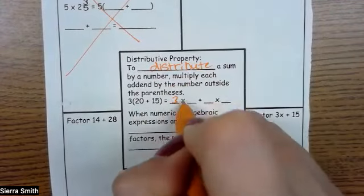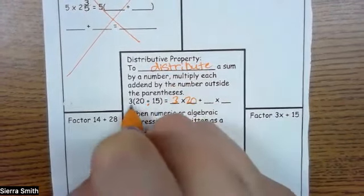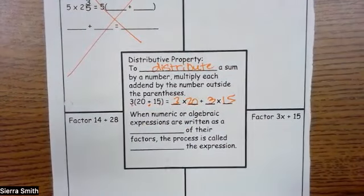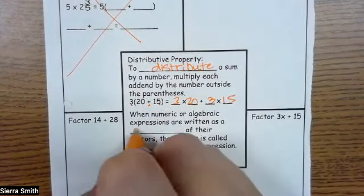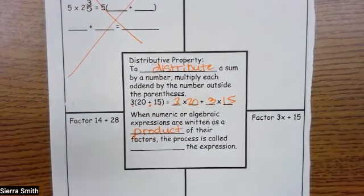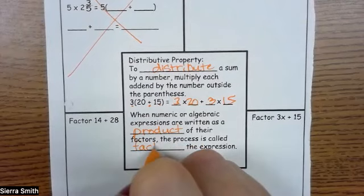So 3 times 20 plus 3 times 15. When numeric or algebraic expressions are written as a product of their factors, the process is called factoring the expression.